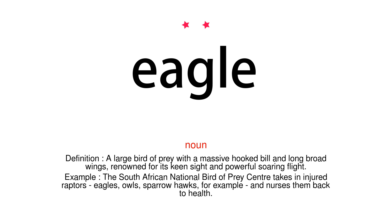Noun. Definition: A large bird of prey with a massive hooked bill and long broad wings, renowned for its keen sight and powerful soaring flight. Example: The South African National Bird of Prey Center takes in injured raptors — eagles, owls, sparrow hawks, for example — and nurses them back to health.